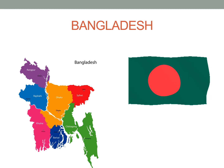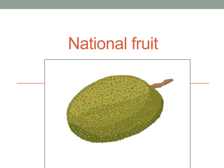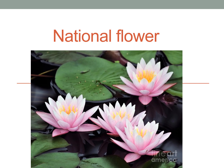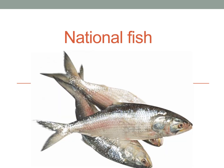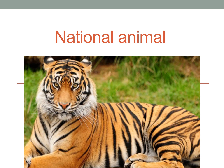Now we will practice some national objects of Bangladesh. This is jackfruit — the national fruit of Bangladesh. This is water lily — water lily is our national flower. This is magpie robin — our national bird. This one is hilsha fish — the national fish of Bangladesh. This is royal Bengal tiger — the national animal of Bangladesh.